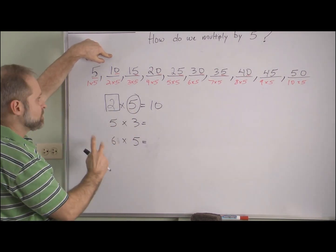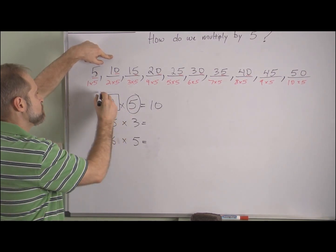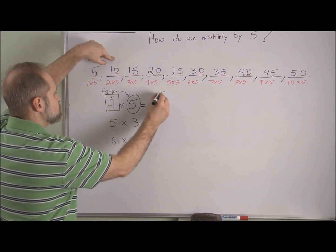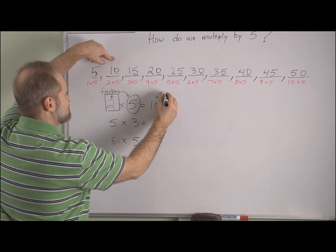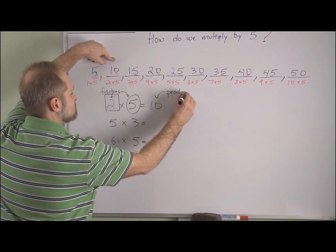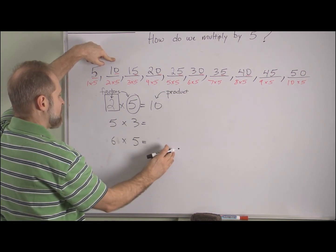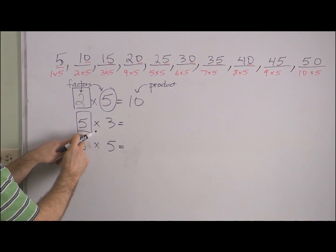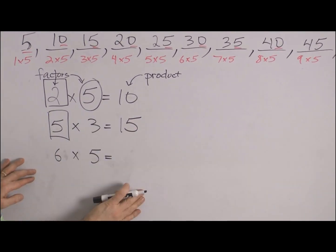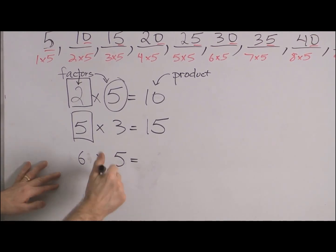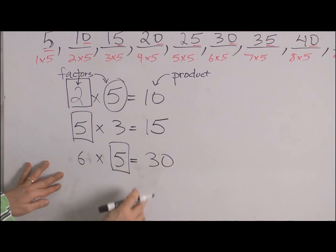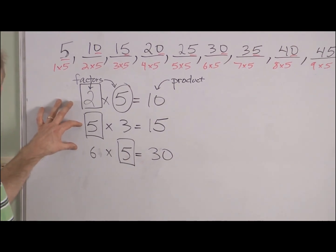Just so you know, these two numbers that you multiply are called factors, and your answer to a multiplication problem is called the product. For the second example, counting by fives: five, ten, fifteen — that's three fives, so the answer is fifteen. For the last one, I don't know how to count by sixes yet, so I'll count by fives — I've got to count six of them: five, ten, fifteen, twenty, twenty-five, thirty. Hopefully you got those answers. Your worksheets will give you a chance to practice these.